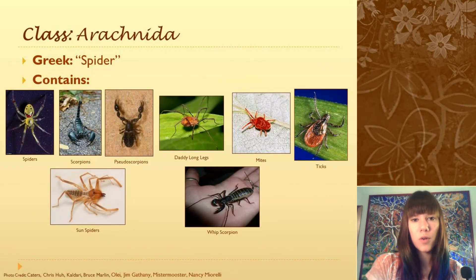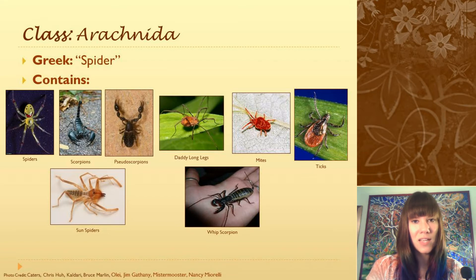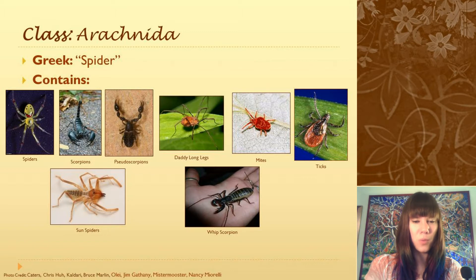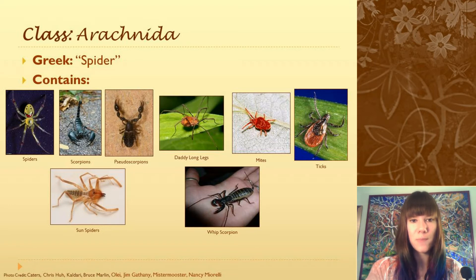Now we're in the grouping Arachnida, which in Greek just means spider, and it includes spiders, scorpions, pseudoscorpions, daddy longlegs, mites, ticks, sun scorpions and whip scorpions. We're not going to talk very much about the sun spider because it lives way out in the west in the middle of the desert and you're unlikely to come across one. We're also not going to talk about the whip scorpion because unless you're really lucky in Florida, you won't see them — they're mainly a tropical species. But you should just know that they exist and they're particularly charismatic.